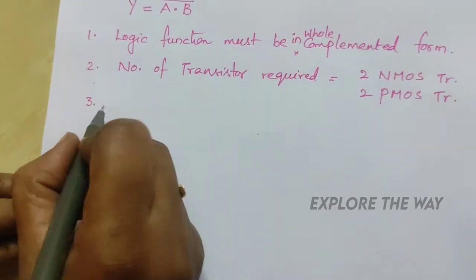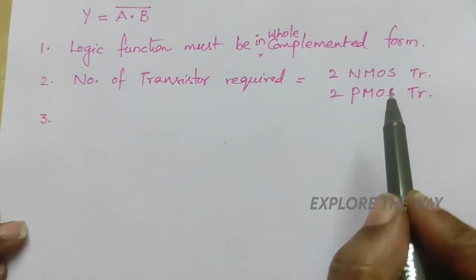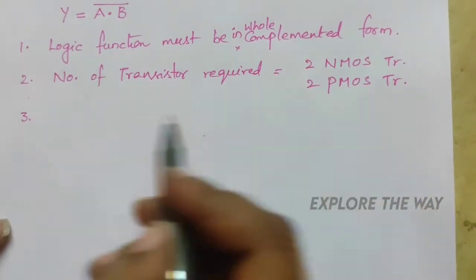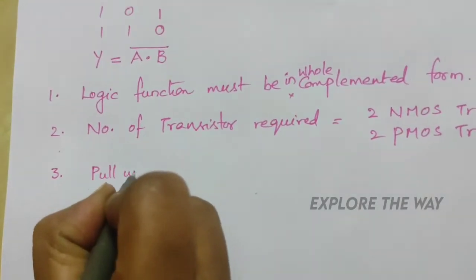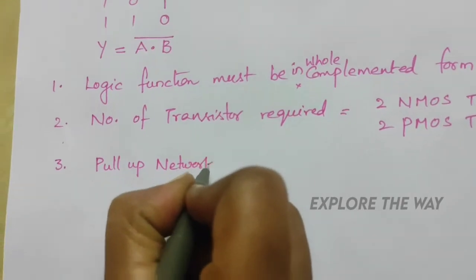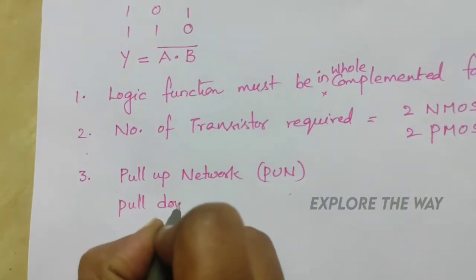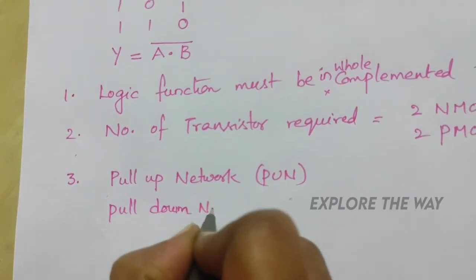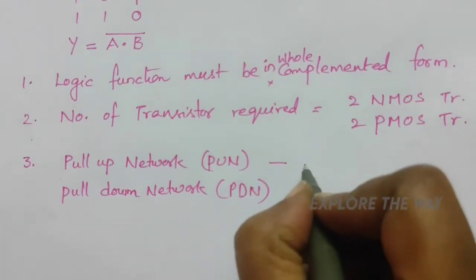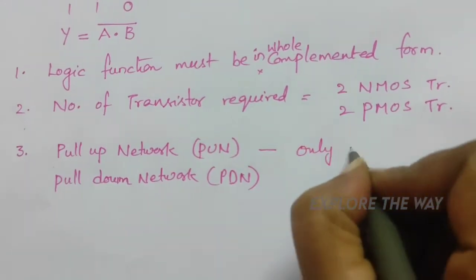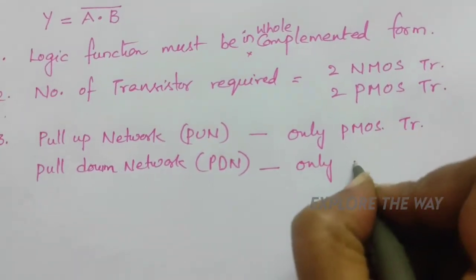The third point is that these NMOS and PMOS transistors are used to implement the pull-down network and pull-up network of the CMOS logic circuit. Every CMOS logic circuit consists of one pull-up network (PUN) and one pull-down network. The pull-up network is implemented using only PMOS transistors, and the pull-down network is implemented using only NMOS transistors.